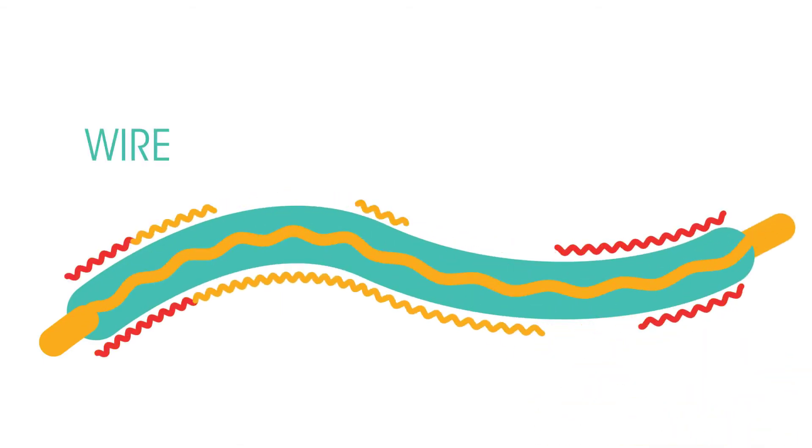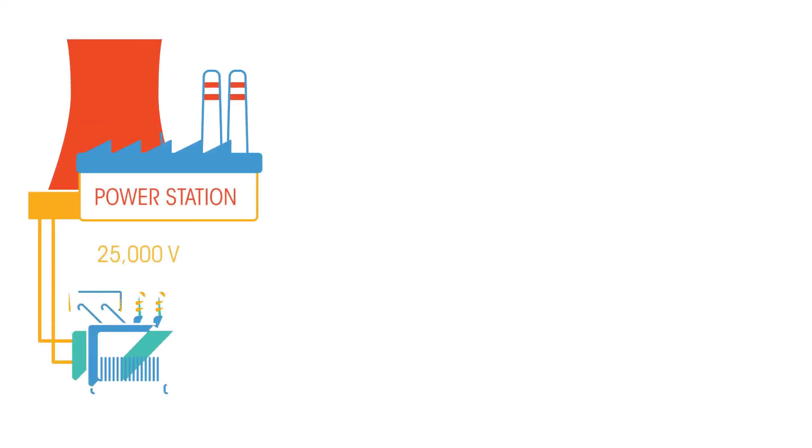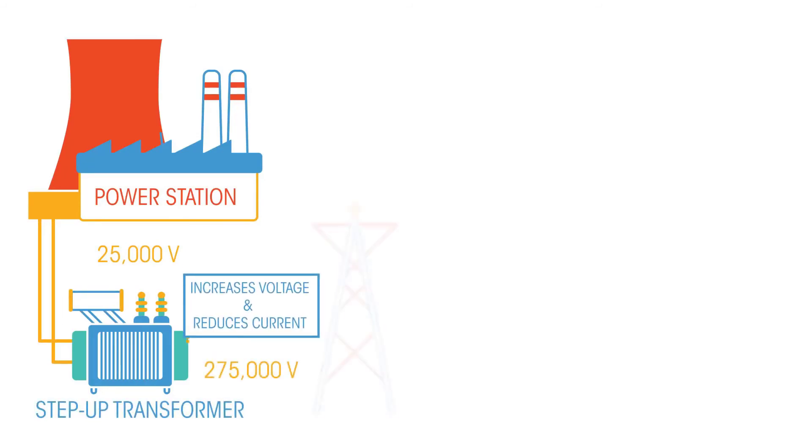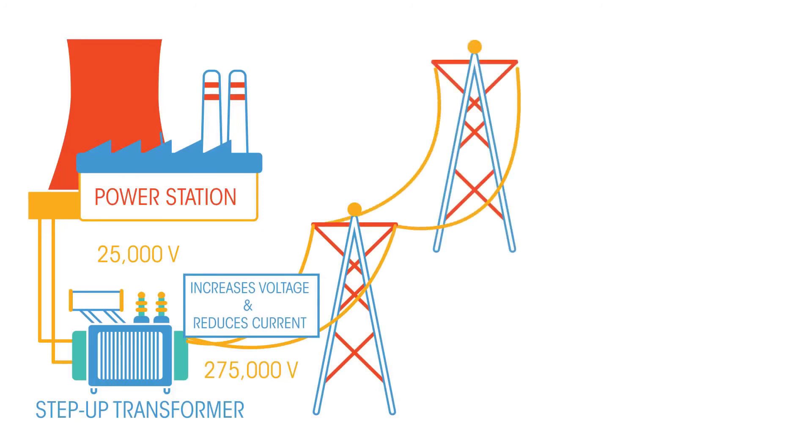This is because some energy traveling through the wire is lost as heat. In order to lose as little energy as possible, transformers are used. When the electricity leaves the power station, it passes through a step-up transformer. A step-up transformer increases the voltage and reduces the current. Reducing the current makes the transfer of electricity more efficient, as less energy is lost as heat.